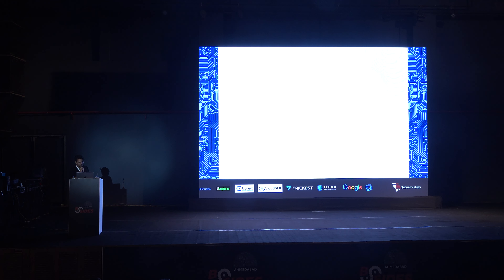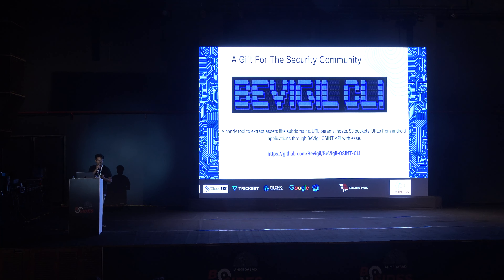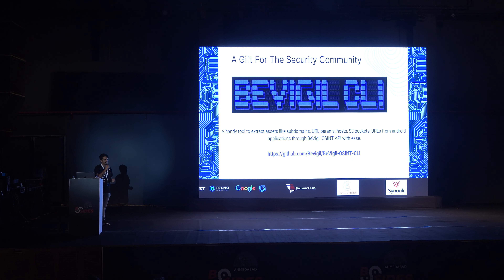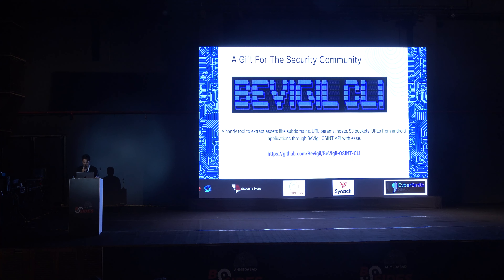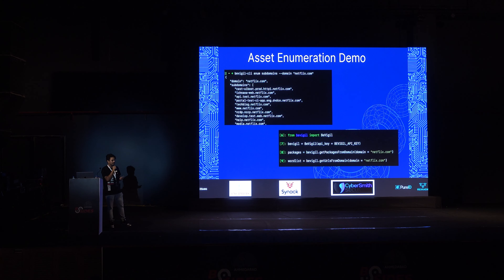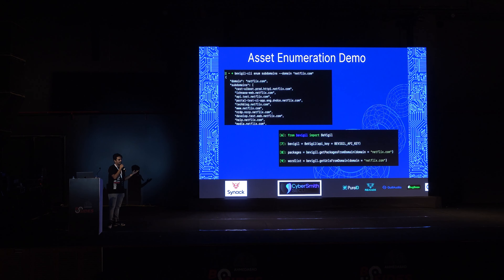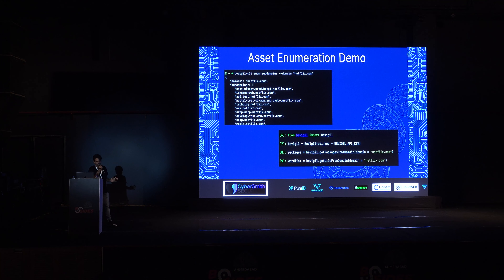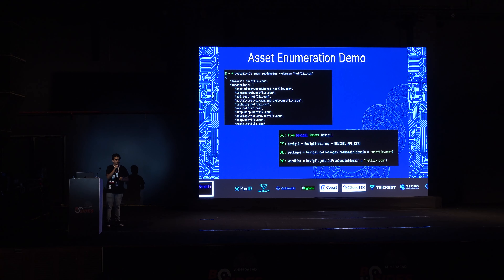We have a little gift for the security community: B-Vigil CLI — a command line utility and Python library built as a wrapper over the OSINT API that gives you easy access to extract all these assets. More details on usage and installation can be found in the link mentioned here. For a quick demo: if you want to enumerate subdomains for netflix.com, you run 'bvigil-cli enum subdomains' and pass in the domain name, and it gives you all subdomains encountered in 1 million Android applications related to Netflix. If you have an automated recon flow, you can use the B-Vigil Python library to achieve the same thing.